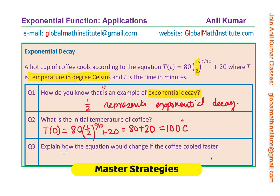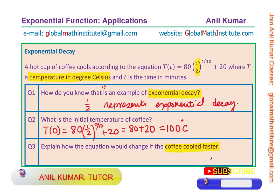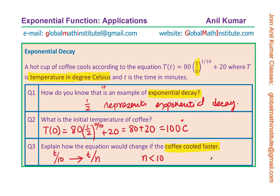Question number 3 is: explain how the equation would change if the coffee cooled faster. The key word is faster cooling. Currently the equation says the temperature becomes half in 10 minutes. For faster cooling, the temperature should reach half in less than 10 minutes. So we look for a cooling factor where t over 10 changes to t over n, where n should be less than 10 and greater than 0. That is what needs to change.